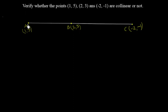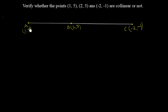Collinear points are points which lie on the same line. So here I have named the points: A is (1, 5), B is (2, 3), and C is (-2, -1). Let's assume these points A, B, C are collinear and check whether that holds.